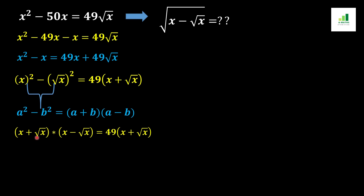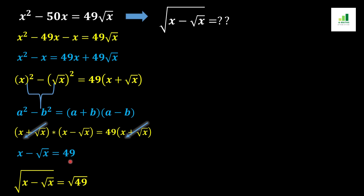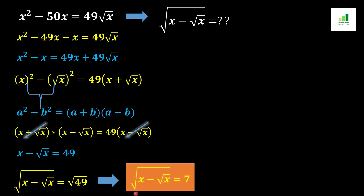Now (x + √x) cancels from both sides, leaving x - √x = 49. Applying the square root to both sides gives √(x - √x) = √49, but since our targeted expression is √x - √x — that is, under root x minus under root x — we get the answer 7, because √49 = 7.